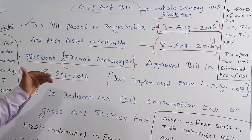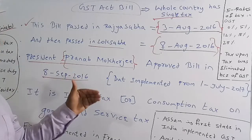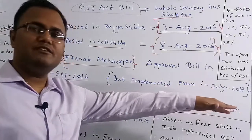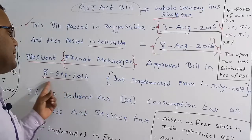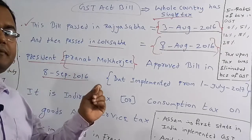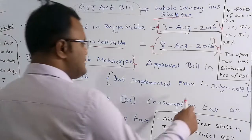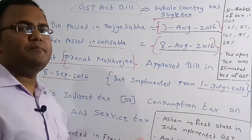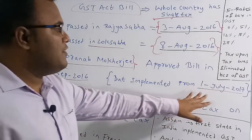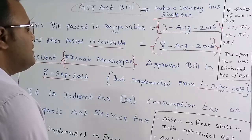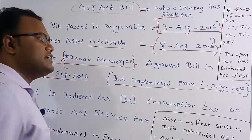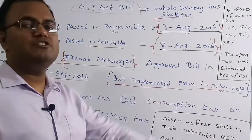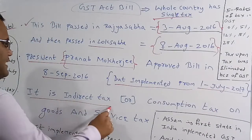The bill was signed by President Pranab Mukherjee on 8th September 2016, but it was implemented effectively from 1st July 2017. From that date onwards, the GST Act was implemented in India. GST is an indirect tax, also called a consumption tax on goods and services.